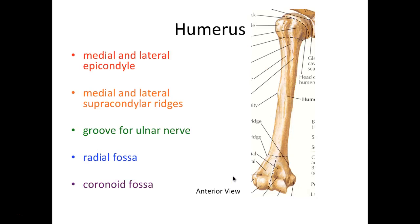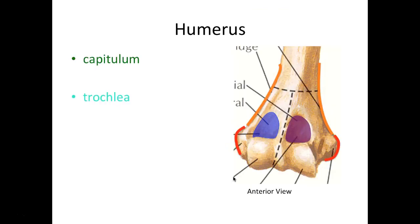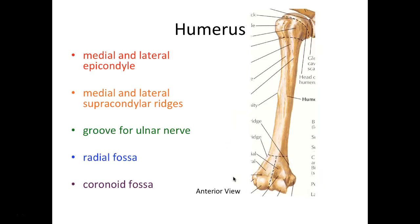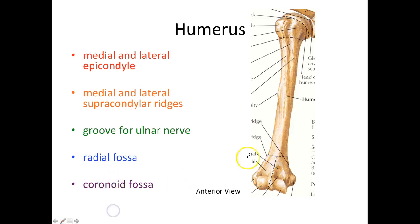Now we have the distal portion of our humerus. A lot of people get the terms epicondyle, supracondylar ridges, and condyle mixed up, so I'll clarify. You'll see dotted lines at the distal portion dividing out the lateral condyle — all of this portion colored in yellow — separating it from the medial condyle. Condyle — add this to your terminology list — means knob, like a doorknob.